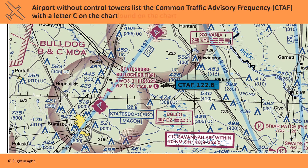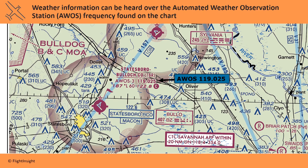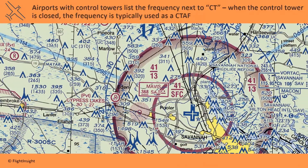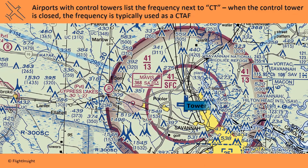Weather information can be heard over the Automated Weather Observation Station, or AWOS, frequency found on the chart. Airports with control towers list the frequency next to CT. When the control tower is closed, the frequency is typically used as a CTAF.